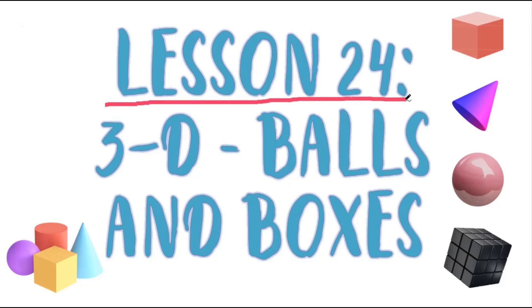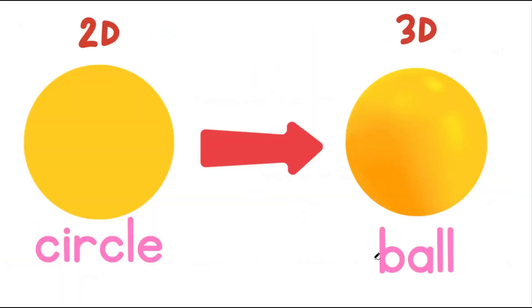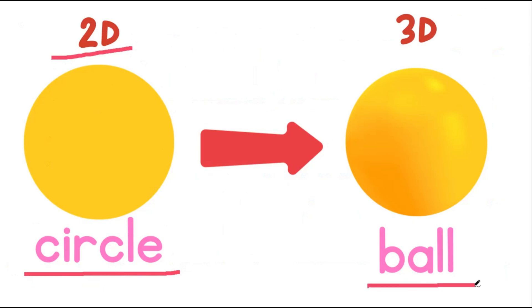Lesson 24: 3D Balls and Boxes. This is a circle. A flat circle is a 2D shape. This is a ball. A ball is the 3D shape of a circle.